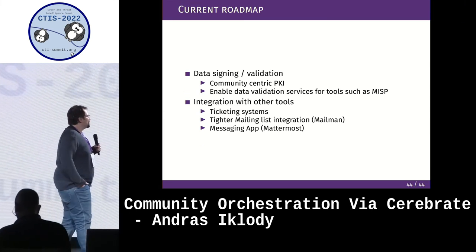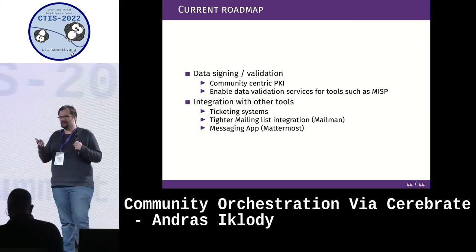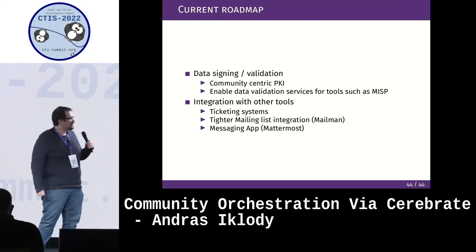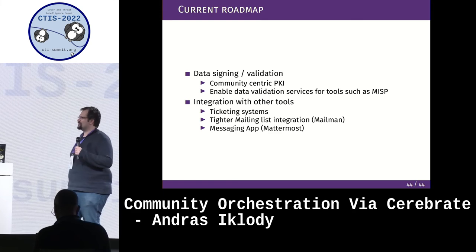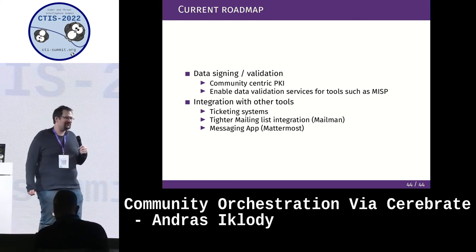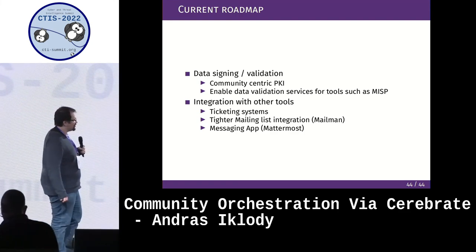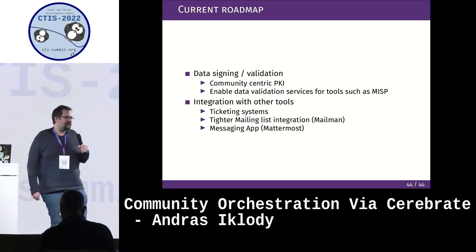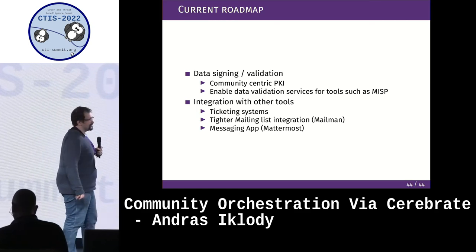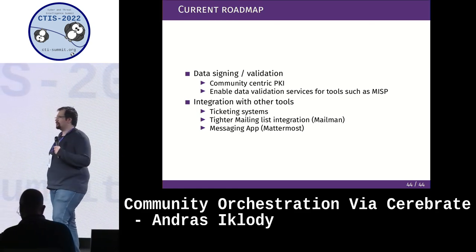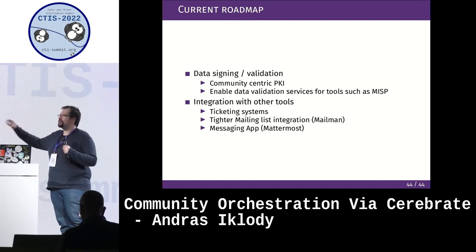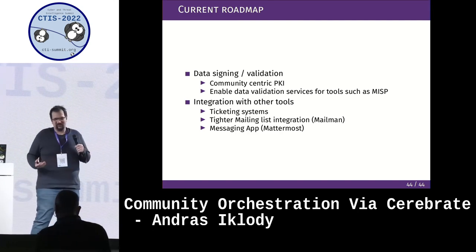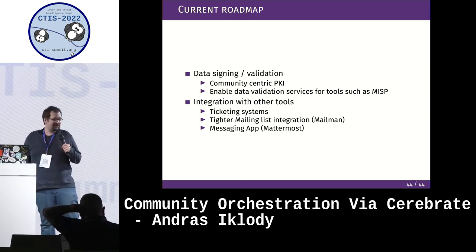For the current roadmap, we want to finish whatever tasks we have in scope of the Mellicertus project. After that, the data signing and data validation part is super interesting — we just started with this when the geopolitical situation recently changed, but we have much more ideas of where we want to go. We want to start being able to encrypt data as well, sign sharing groups so they're more protected against modifications, and then start integrating into a bunch of different things — ticketing systems, messaging apps, and so on.